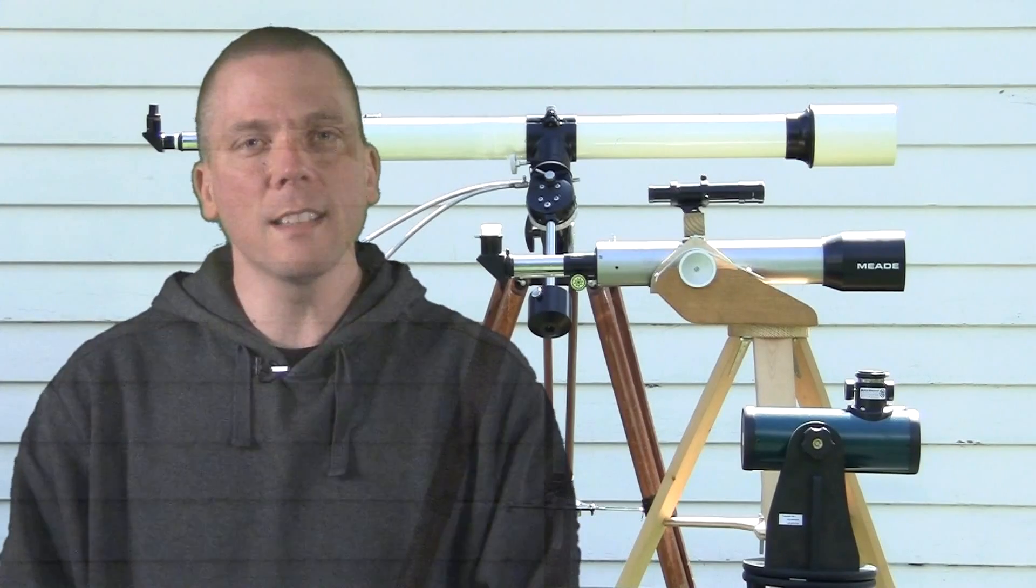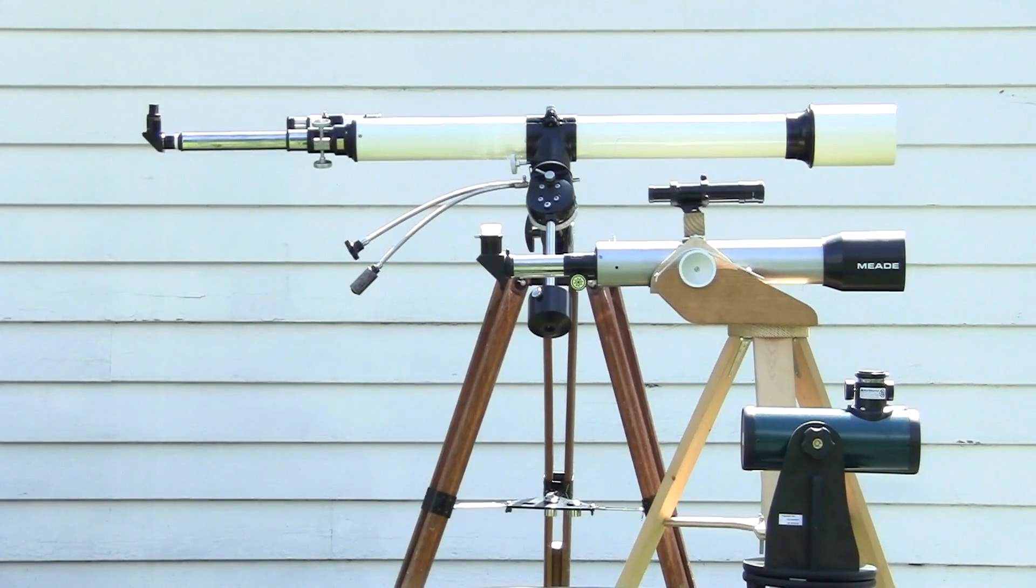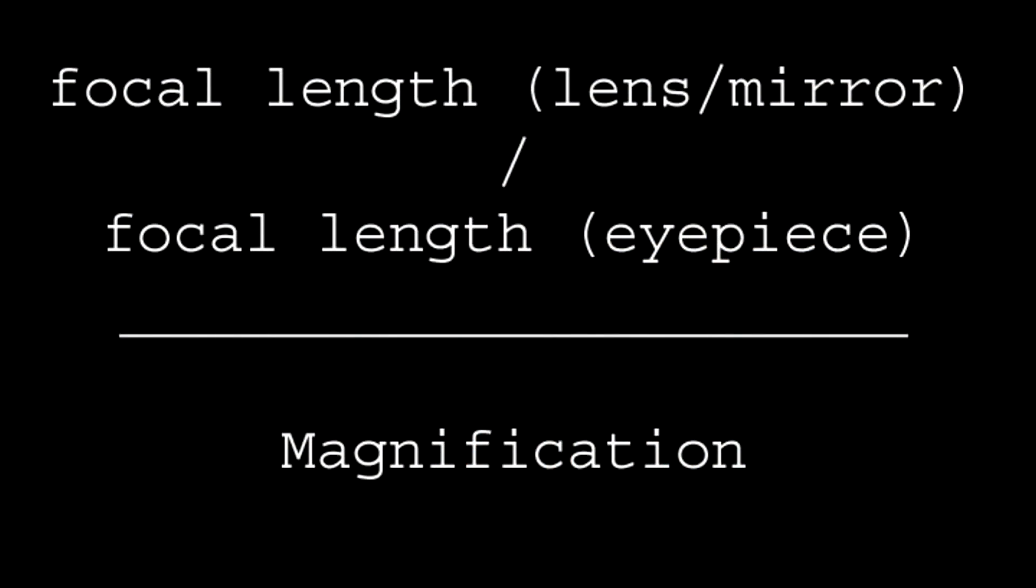But let's not get too far into the weeds, we'll look at these three similarly sized telescopes to understand magnification first. To determine magnification of a telescope, we perform a simple calculation. Take the focal length of the telescope in millimeters and divide that number by the focal length of the eyepiece you are using.